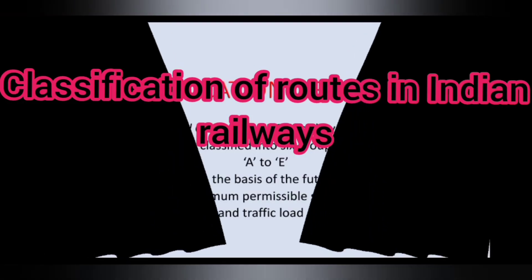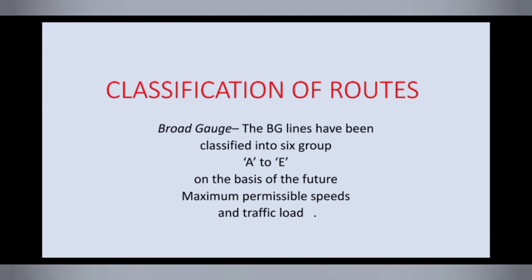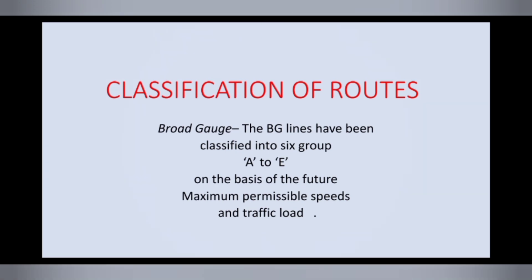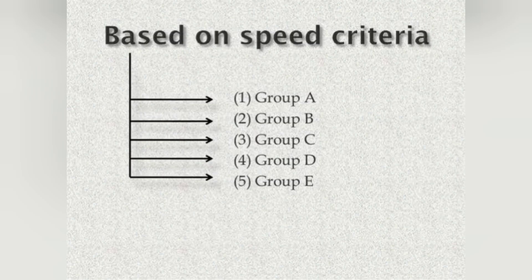Routes of Indian Railway are classified by maximum speed permitted and annual traffic density. Most of the Indian Railway lines are broad gauge lines, which is also called Indian gauge. The broad gauge line is 1676 mm. Based on the maximum permissible speed limit, Indian Railway routes are classified into five groups. We can see them one by one.